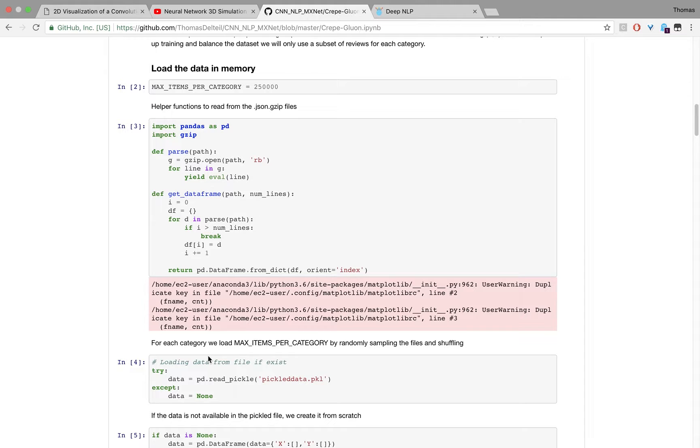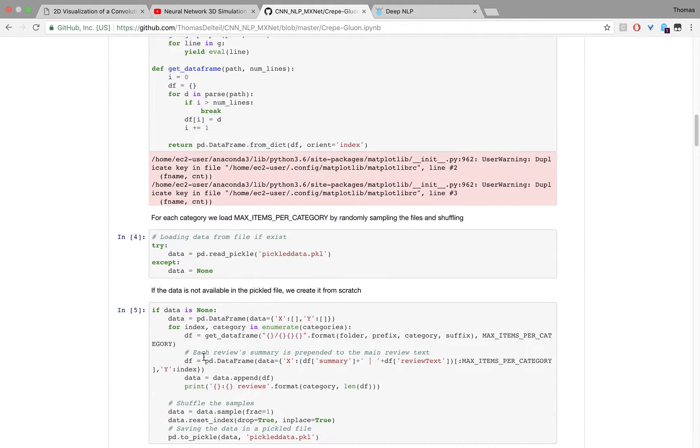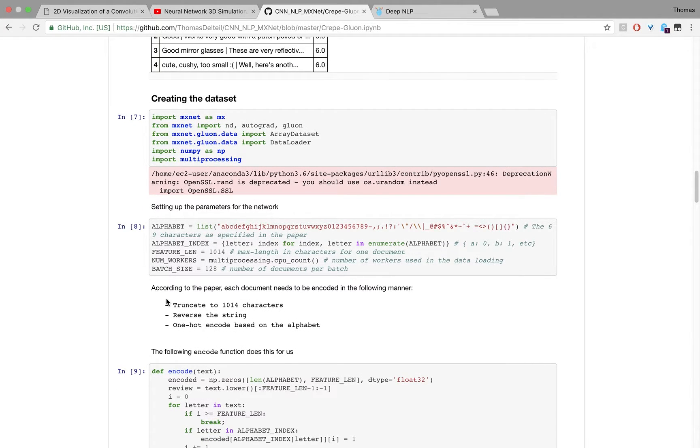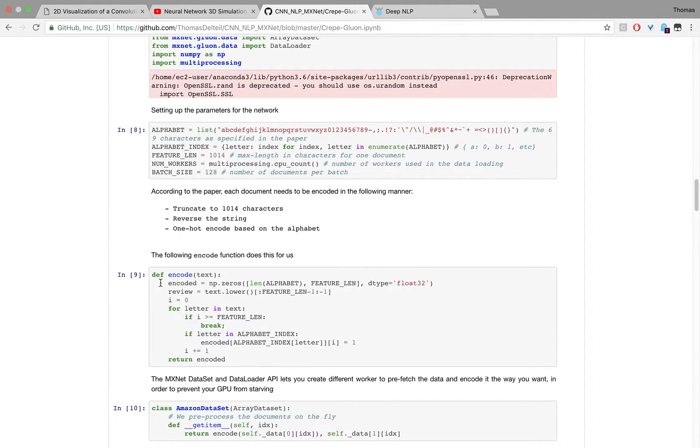Once the dataset is downloaded, we load it in memory. We're going to preprocess it, remember the quantization step where we transform each document into a one-hot encoded version.